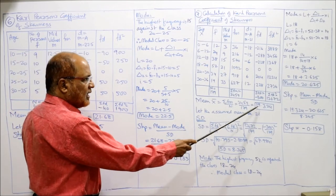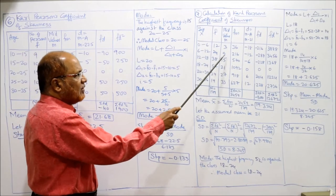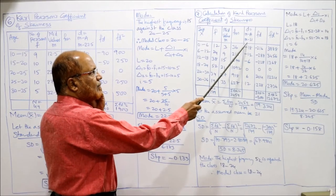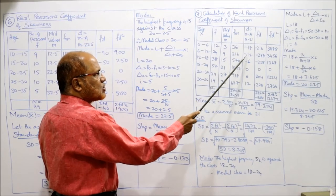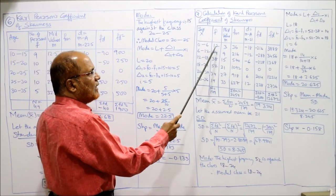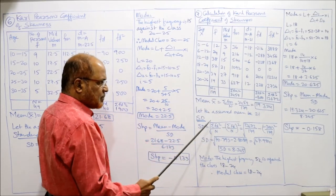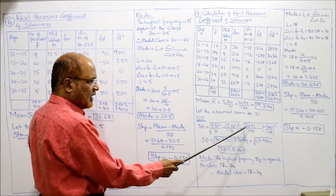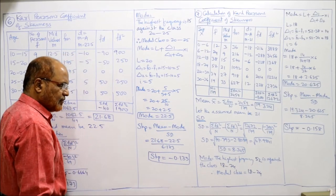Mean = Σfm/n = 3459/179 = 19.324. The nearest mid value to 19.324 is 21, so assumed mean A = 21. Deviations d = m − 21: 3−21 = −18, 9−21 = −12, 15−21 = −6, 21−21 = 0, then 6, 12. Multiplying f×d gives Σfd = −300, and Σfd² = 12672. Standard deviation = √(12672/179 − (−300/179)²) = 8.245.